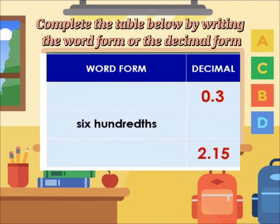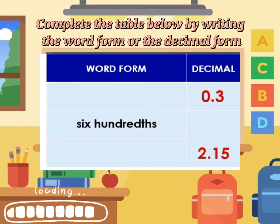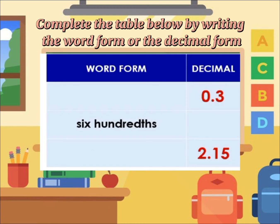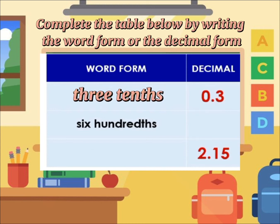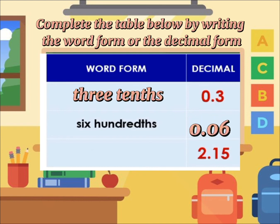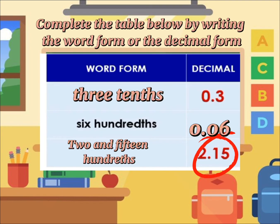For our next exercise, you have to complete the table below by writing the word form or the decimal form. Time's up! What is the decimal form of 0.3? Very good — it is three tenths. What is the decimal form of six hundredths? Very good — it is 0.06. Lastly, what is the word form of 2.15? Very good — it is two and fifteen hundredths.